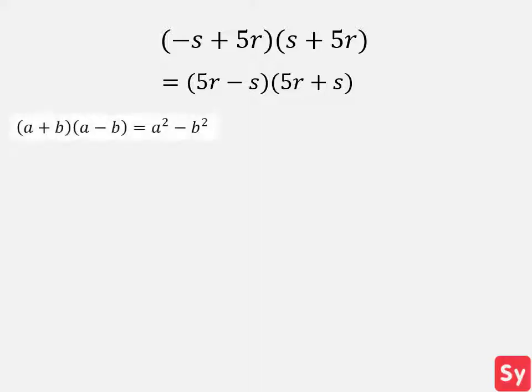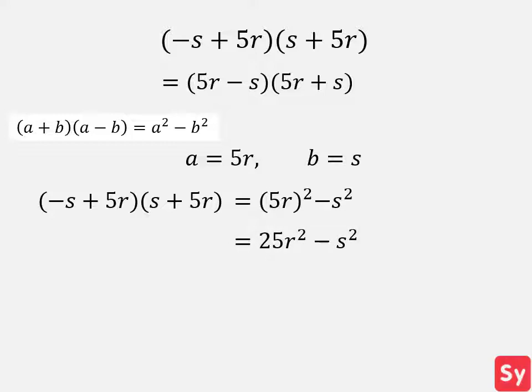Using this identity, we can see that a equals 5r and b equals s. We plug these values back into the identity and get that negative s plus 5r times s plus 5r equals 5r squared minus s squared. We then simplify and this equals 25r squared minus s squared, which is our answer.